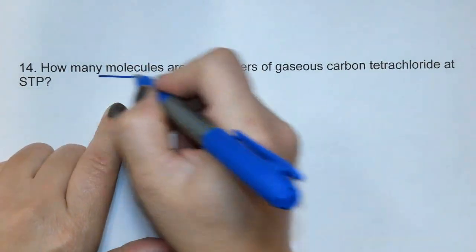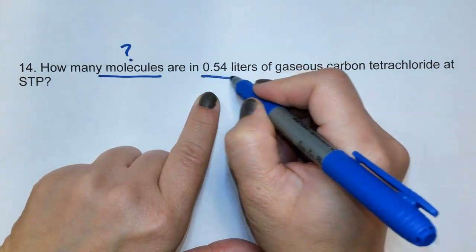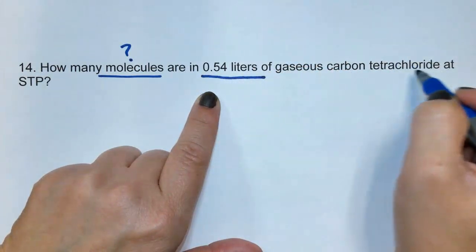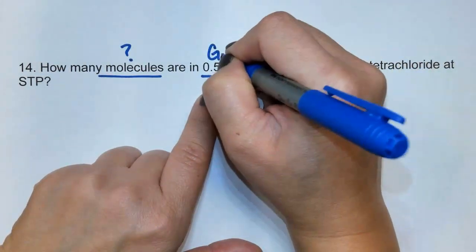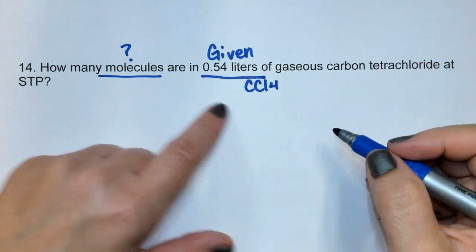This one says how many molecules, that means that this is what we're trying to solve for, and then we have 0.54 liters of carbon tetrachloride, so this is our given value, and it is of carbon tetrachloride, which is CCl4.